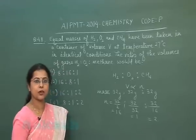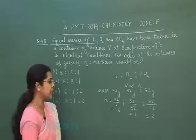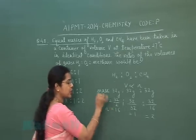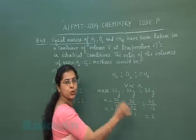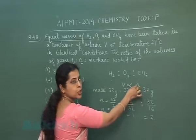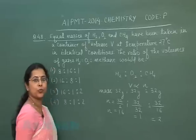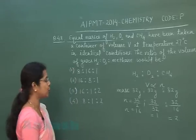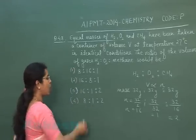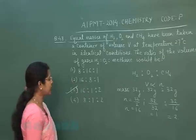Now since the gases are present at identical conditions, their molar ratio is 16:1:2. And whatever will be their molar ratio, that will be directly proportional to the volume ratio. It means the volume ratio should be 16:1:2. So the correct answer is the third option.